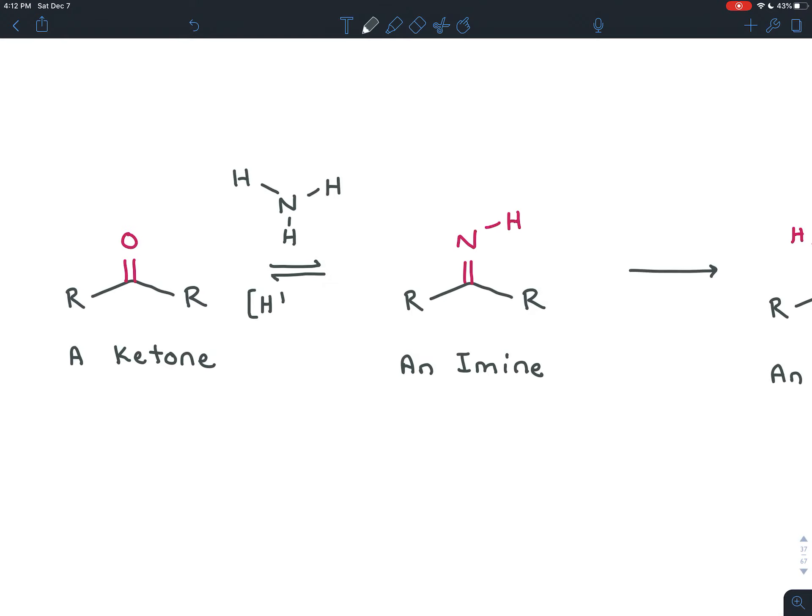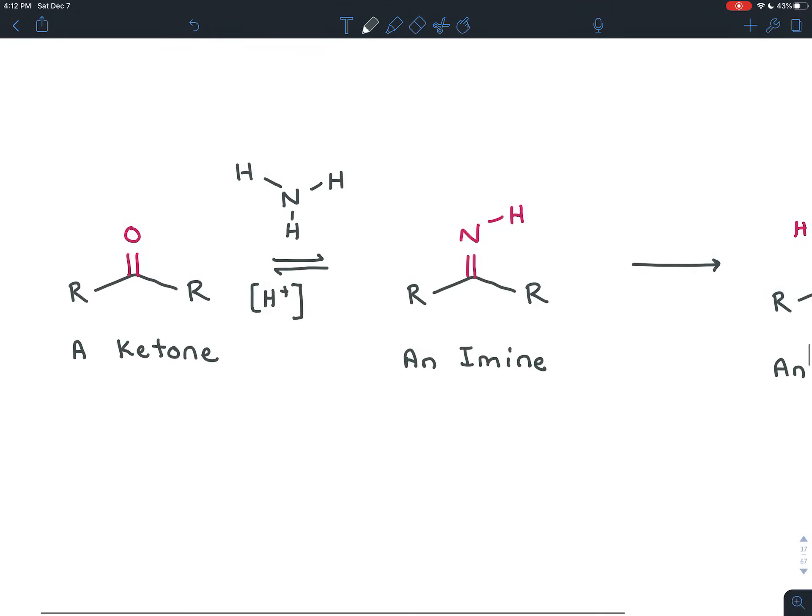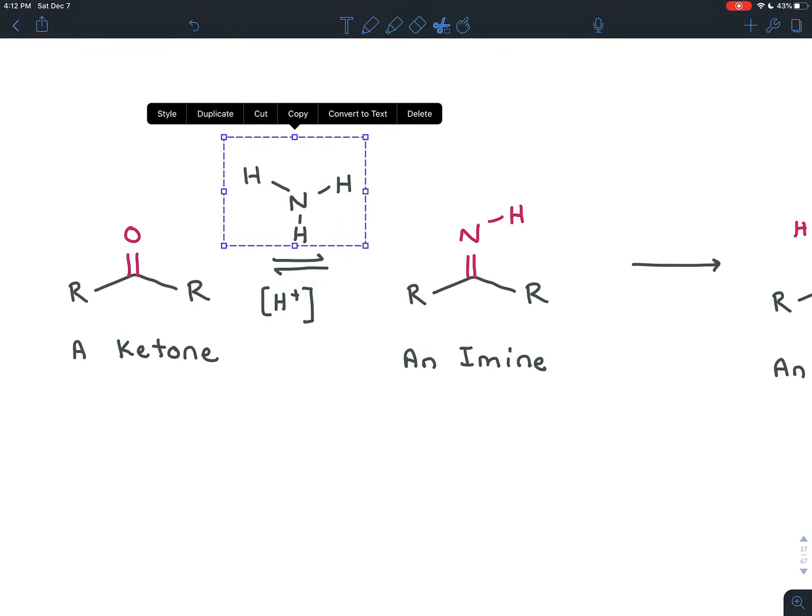You also need, if you remember the mechanism, an acid catalyst. And those two things together will allow you to create an imine. So ammonia and an acid catalyst.